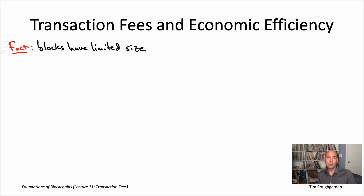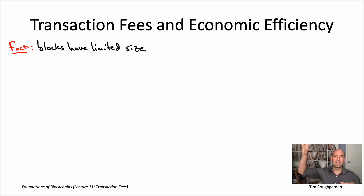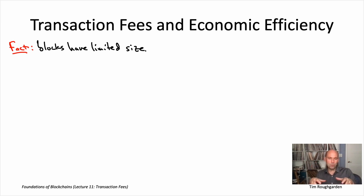That's going to be the topic of layer two scaling solutions — how to have a very small on-chain footprint actually representing a ton of transactions being done off-chain. We'll see ways of doing that for Bitcoin, specifically the Lightning Network, and for Ethereum, specifically roll-ups. But that's a number of lectures in the future. For now, I just want to focus on the fact that the throughput is very limited — Bitcoin and Ethereum can only do a very small number of transactions per second on account of limited block production rates and limited block size.